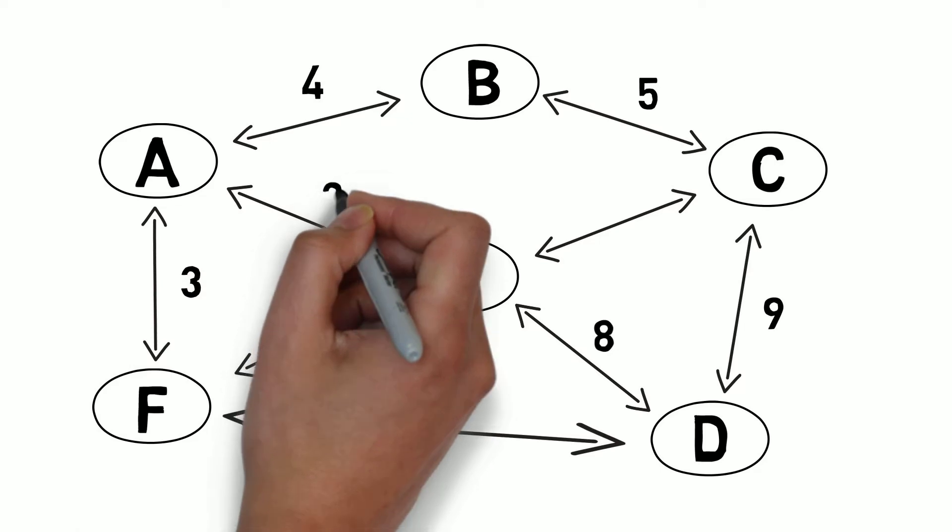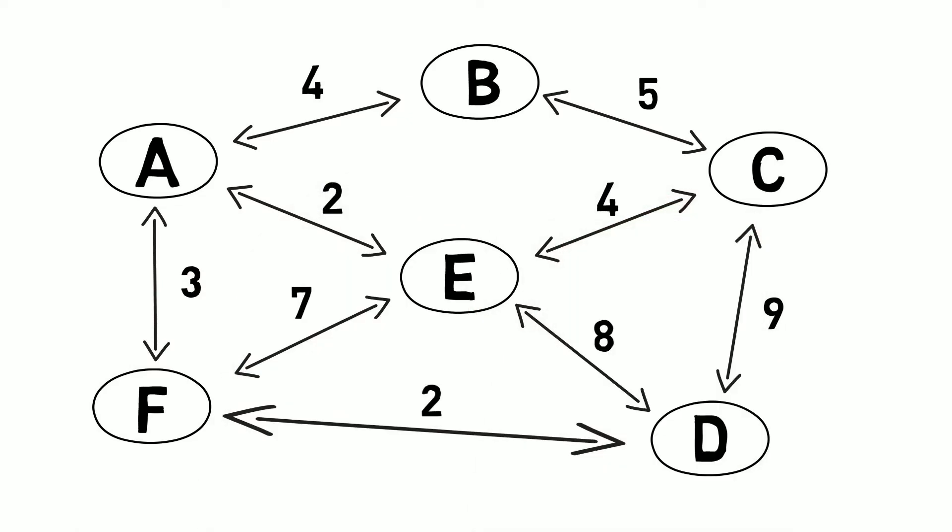If you look at the graph here, we have locations A through F. They are connections between each location with a specific cost. Sometimes a path will cost more to travel than another, and Kruskal's algorithm is used to find the best way to reach each vertex at the lowest cost.